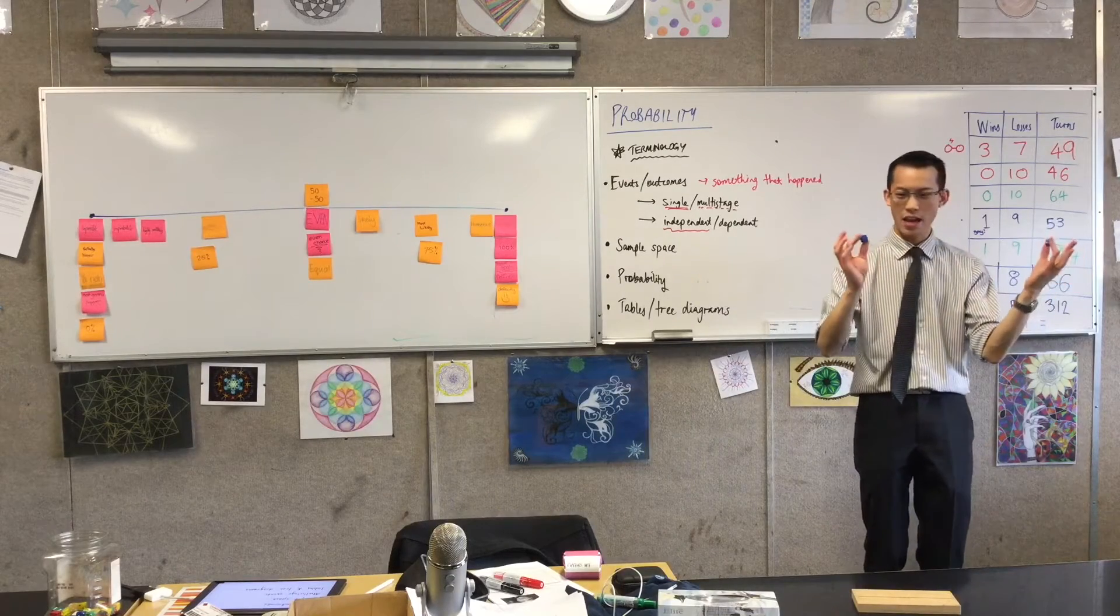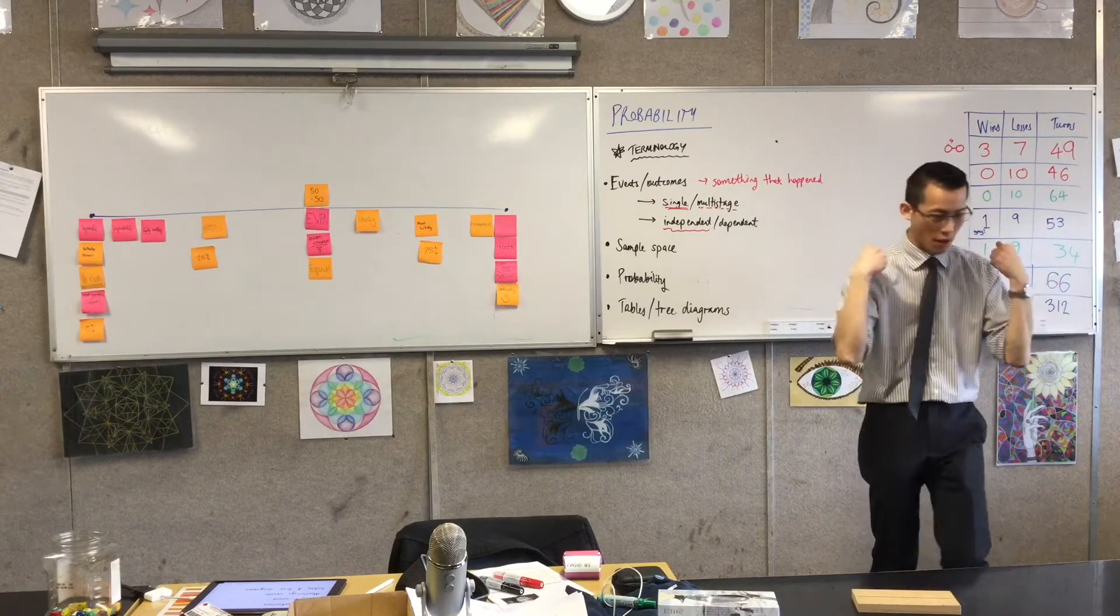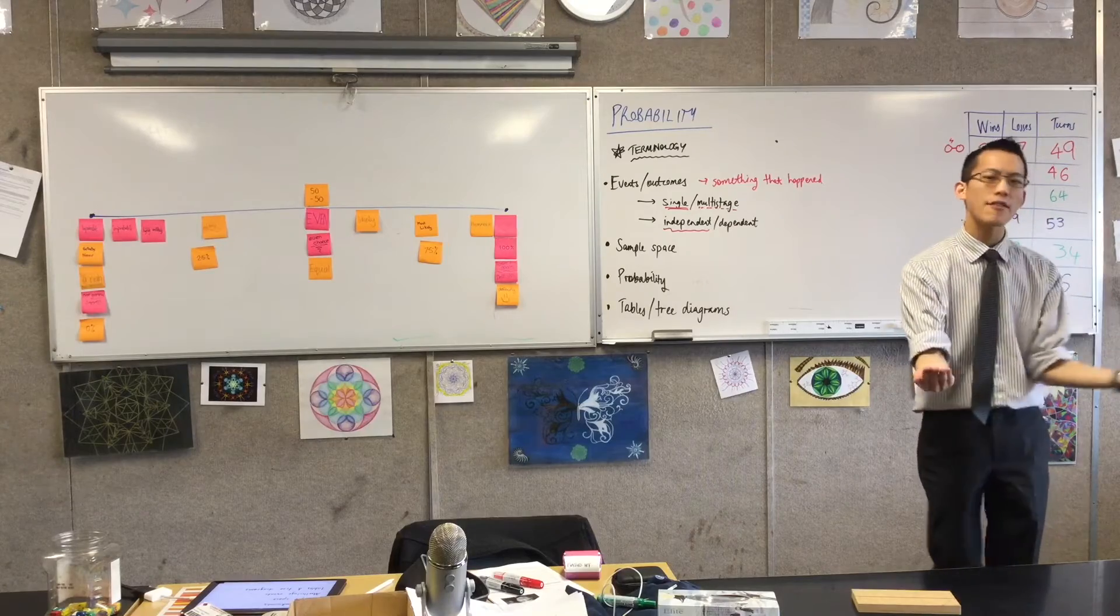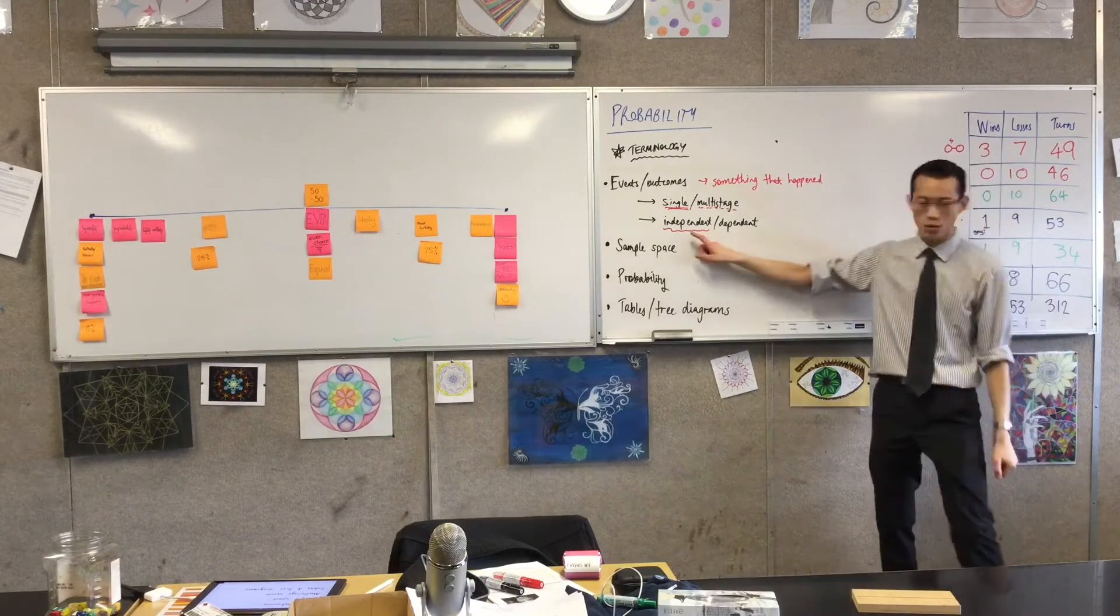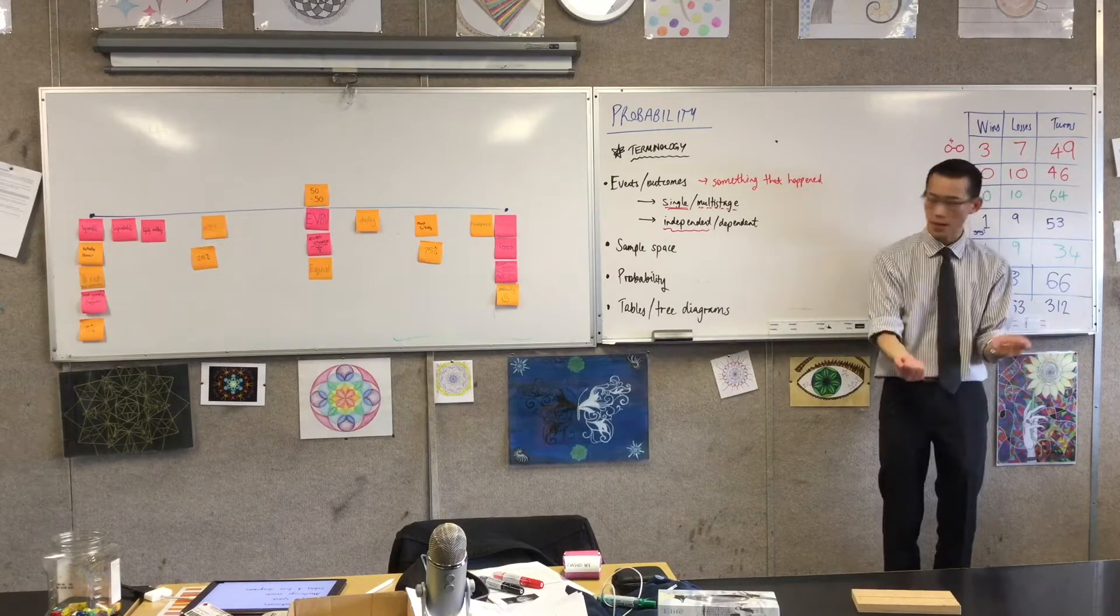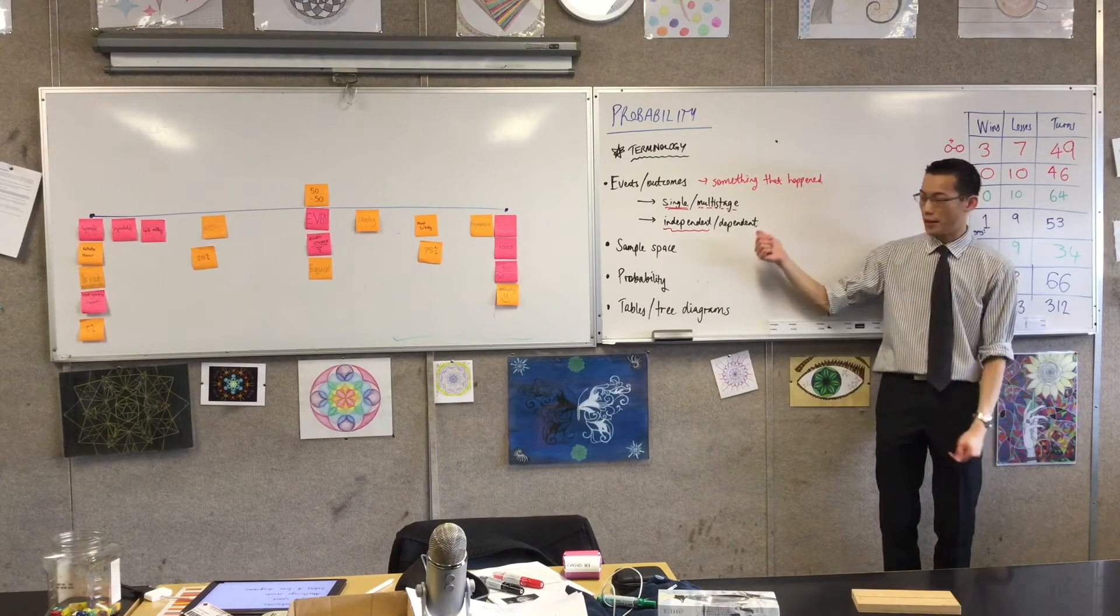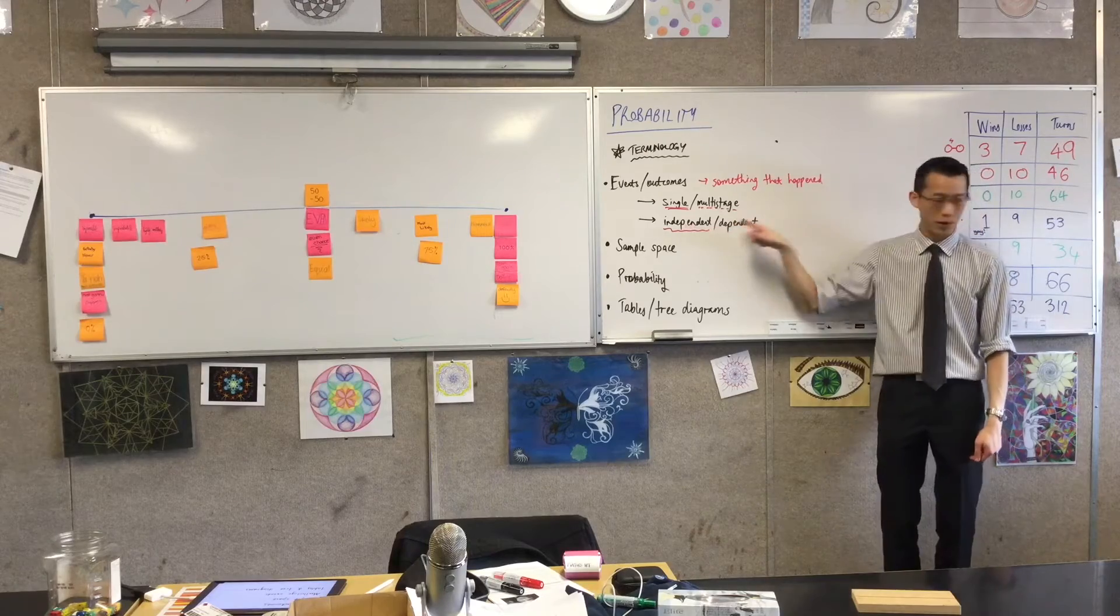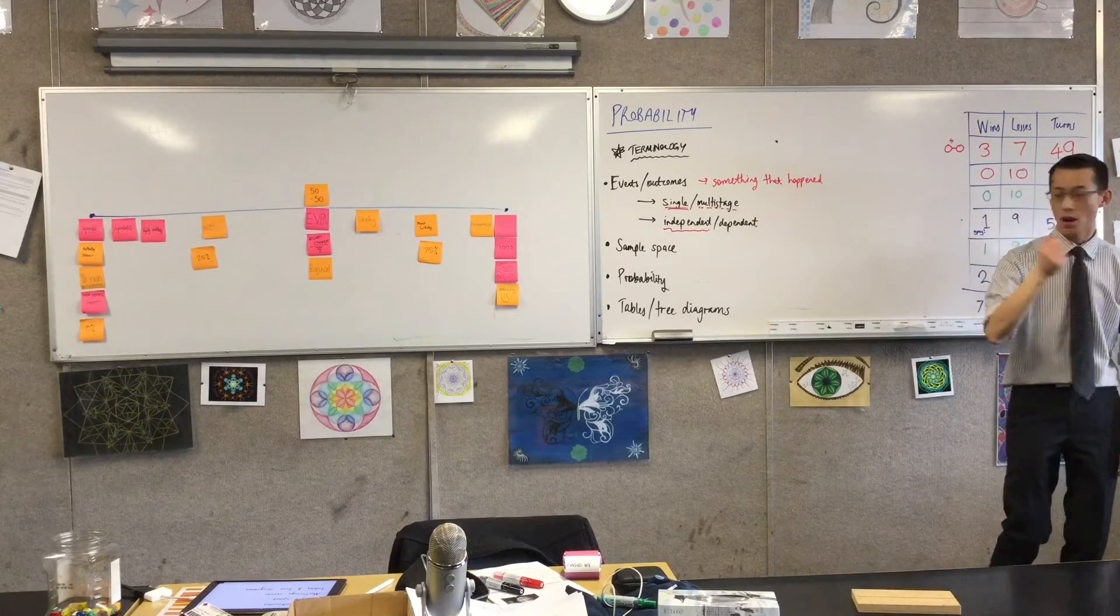If I roll the blue and blue, these are separate things. Me rolling this one and you rolling this one, they don't have any effect on each other, do you agree? Therefore we would call them independent events - they don't have any effect one or the other.